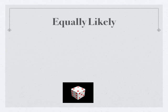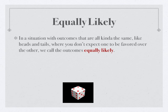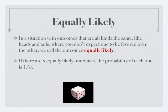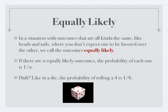There's another concept called equally likely. In a situation with outcomes that are all kind of the same, like heads and tails, you don't expect one to be favored over the other — we call those outcomes equally likely. If there are N equally likely outcomes, the probability of each one is 1 over N. For example, with a die there are six equally likely outcomes, so the probability of rolling any one of them is 1/6. The probability of rolling a four is 1/6.